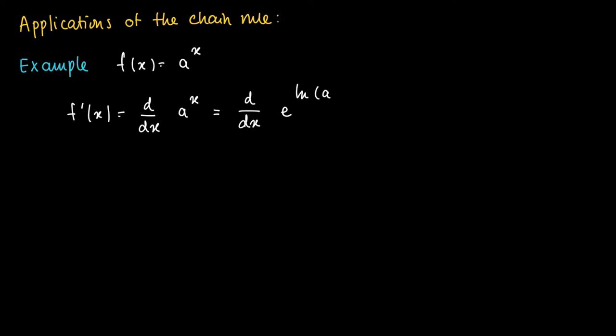So e and ln are inverse functions, so a^x equals e to the power ln of a^x. But now we may look at the exponent x—we can move it forward so we get e to the power x ln a.